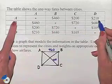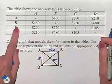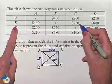A to D, $210. From B to A, we already have the edge taken care of. B to C is 720.